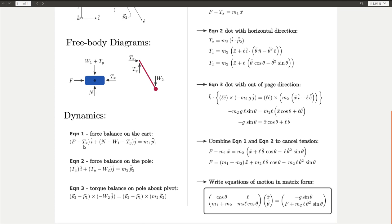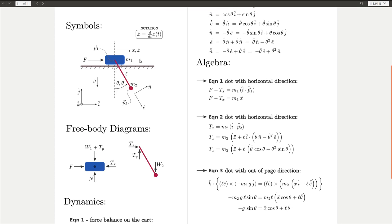Now, starting from these equations, you have five equations and five unknowns. Three unknowns for forces: normal, and Tx and Ty, and then also your two unknown accelerations, x double dot and theta double dot.